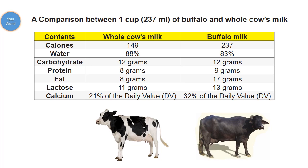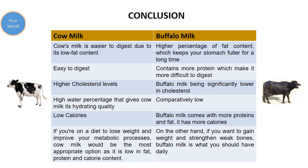Cow milk is easier to digest due to its low fat content, while buffalo milk is more difficult to digest because its higher fat content keeps your stomach fuller for longer. Buffalo milk also contains more protein, making it harder to digest. Cow milk has higher cholesterol levels, while buffalo milk has significantly lower cholesterol. Water content is higher in cow milk and comparatively lower in buffalo milk. Cow milk is lower in calories, while buffalo milk is higher in calories due to its greater protein and fat content.